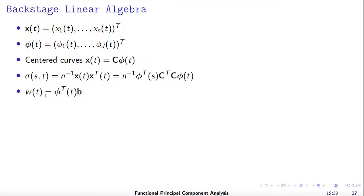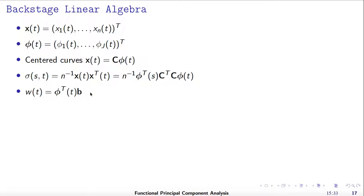The FPC w of t equals phi of t times b, where b is the coefficients for the FPC. We want to solve the eigen decomposition problem — these eigen equations. We have the constraint that the length of w of t has to equal 1. If we define capital W in this integral, then the constraint will be b transpose times W times b equal to 1.